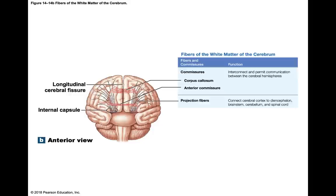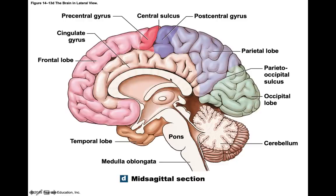Commissural fibers connect between the two hemispheres — myelinated axons connecting the right hemisphere with the left. One is called the corpus callosum and the other is called the anterior commissure. The corpus callosum has 200 million axons that send four billion impulses per second between the two hemispheres.